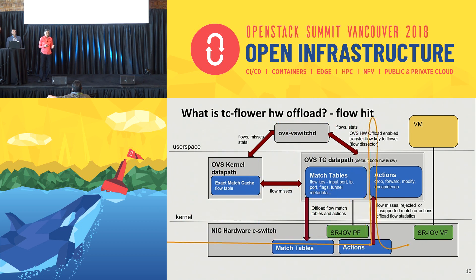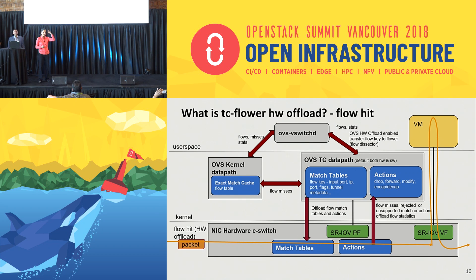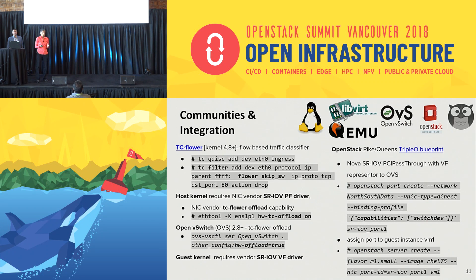On a flow hit, you skip going to the kernel entirely. All the work now happens directly in the e-switch: de-cap the packet, process in the VM, come back down, re-encap, apply QoS, TTL and field setting, then out. All the work that OVS did today is now done in the e-switch, giving you high-performance throughput via SRIOV while retaining all vSwitch capabilities. This community work spans Linux kernel for TC Flower support, Open vSwitch 2.8 for TC Flower offload, and OpenStack — with blueprints, man pages, and commands available for getting this feature working with TripleO, OpenStack, OVS, and Linux.